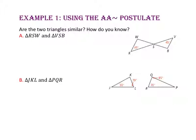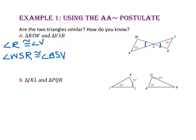In example 1, we will use the angle-angle similarity postulate. Are the two triangles similar, and how do you know? Let's take a look at triangle RSW and triangle VSB. We know that angle R is congruent to angle V because they're both 45 degrees. We also know that angle WSR is congruent to angle BSV because they are vertical angles. Since two angles of one triangle are congruent to two angles of the other, the two triangles are similar.